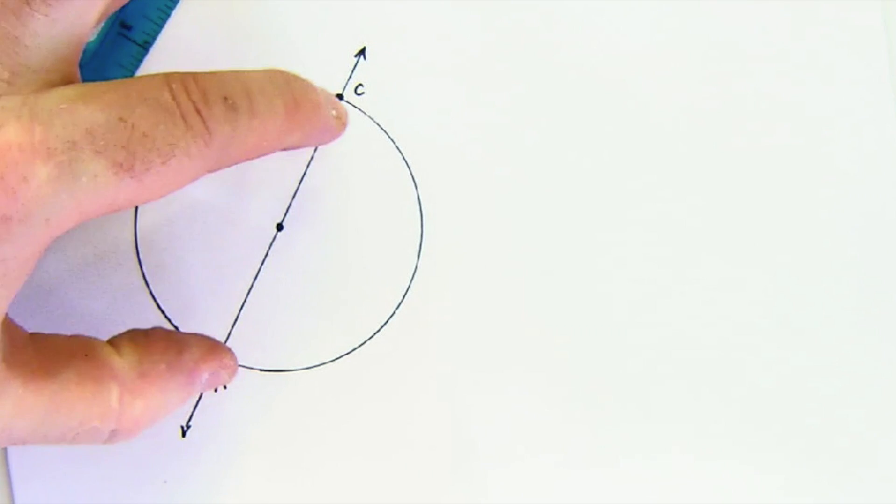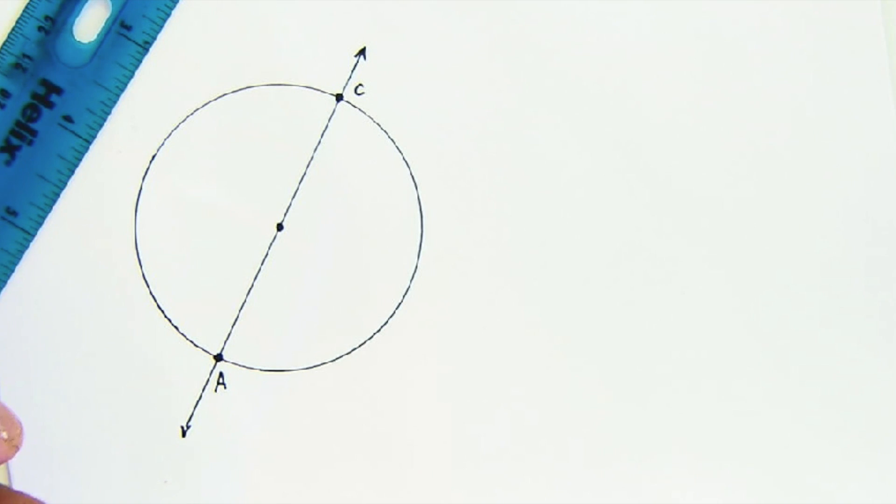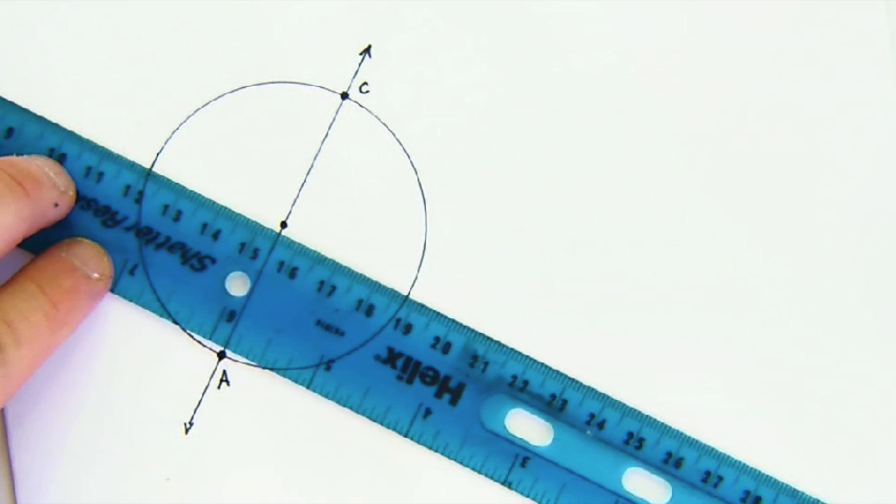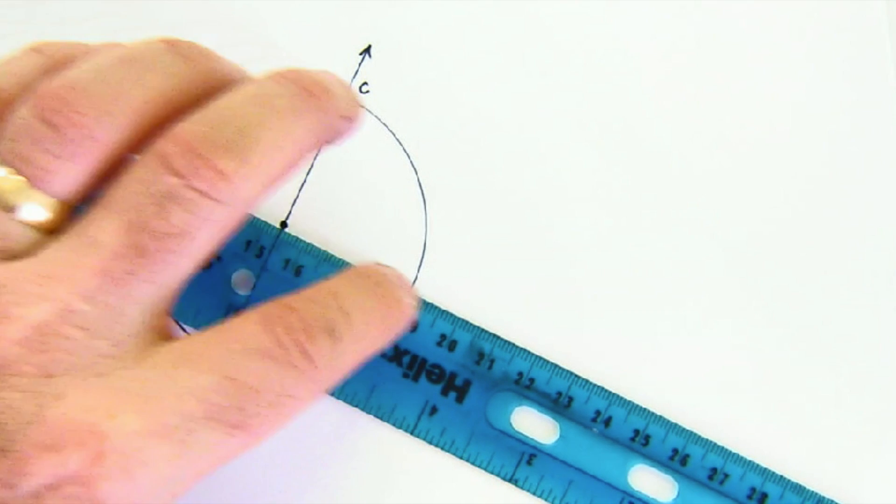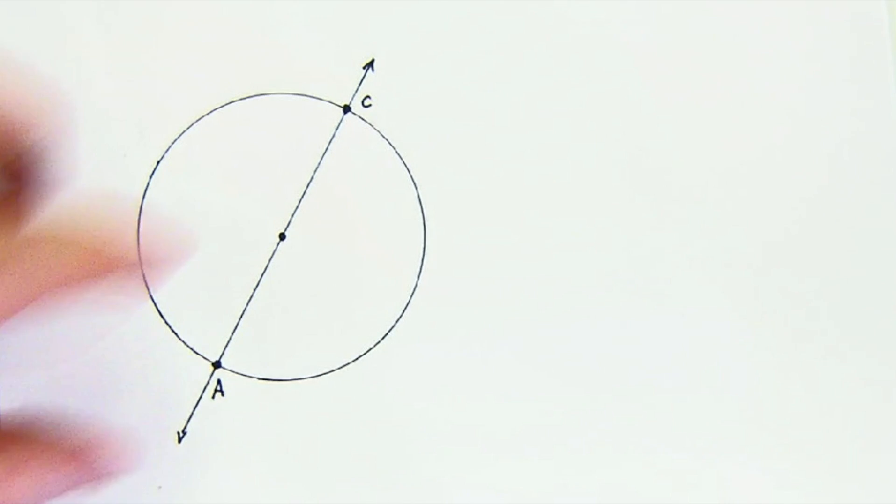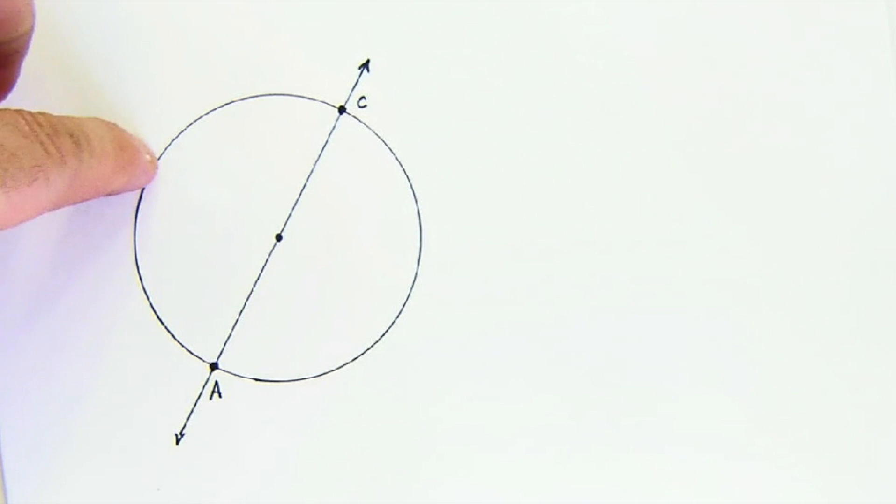Now, we have two of the four points of our square already on our circle. We need the other two that would be here and here. Basically, if we created a perpendicular, we would create two more points that would form our square.